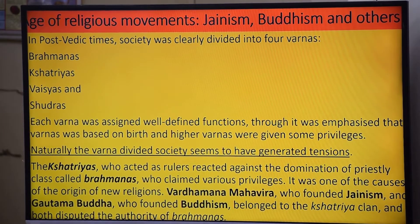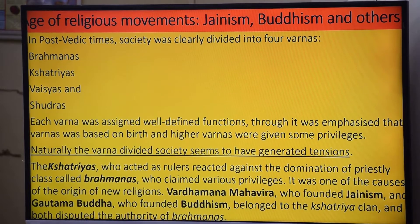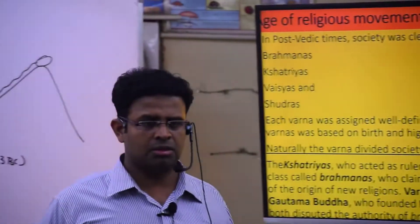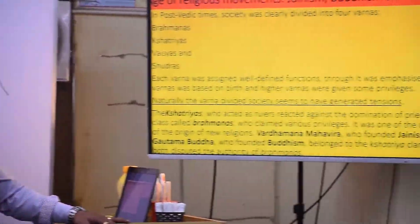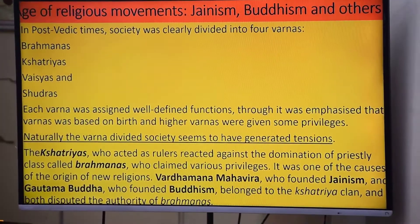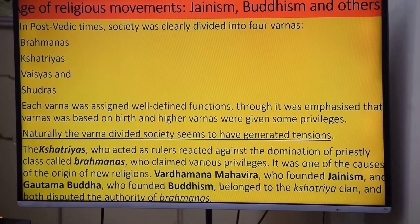The four varnas were Brahmin, Kshatriya, Vaishya, and Shudra. Each varna was assigned a well-defined function, though it was emphasized that varna was based on birth. Higher varnas were given certain privileges. The varna system was no longer based on occupation but on birth, and this naturally generated social tensions. The Kshatriyas who acted as rulers reacted against the domination of the priestly class.